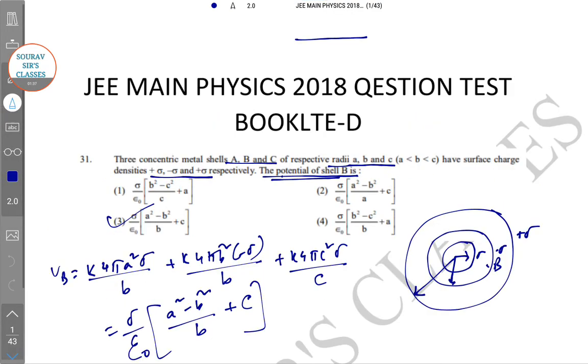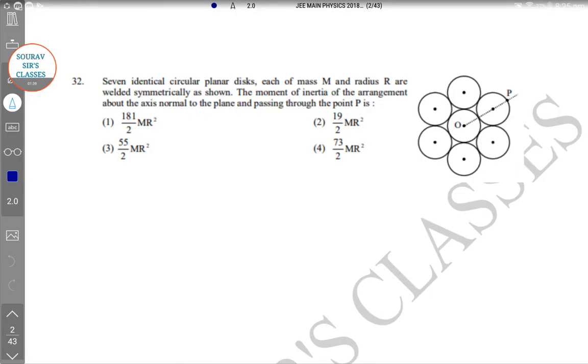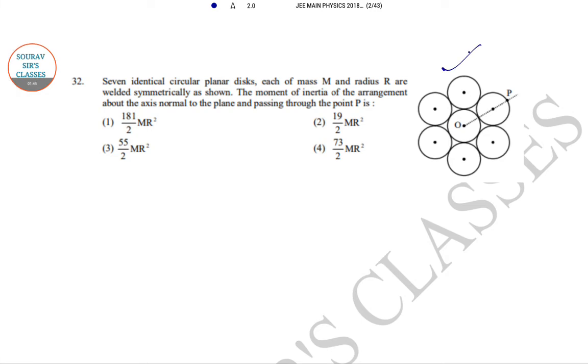Next one. Seven identical circular planar disks are given in the diagram here, each of mass M and radius capital R are welded symmetrically as shown. The moment of inertia of the arrangement about the axis normal to the plane and passing through the point P.